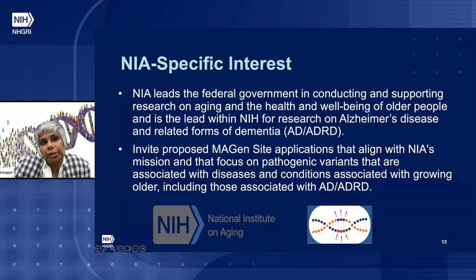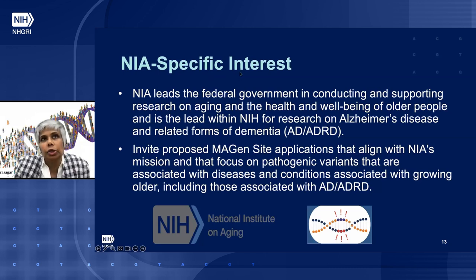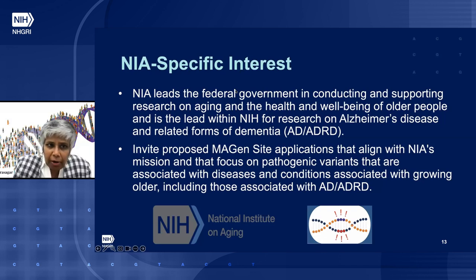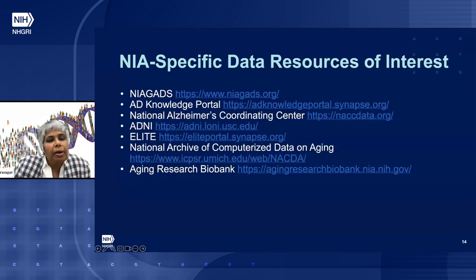The National Institute of Aging has a specific interest. While NHGRI is disease-agnostic, NIA leads the federal government in conducting and supporting research on aging, health, and well-being of older people, and leads NIH research on Alzheimer's disease and related forms of dementia (ADRD). We invite proposals for IMAGINE site applications that align with NIA's mission, focusing on pathogenic variants associated with diseases and conditions related to aging and ADRD. NIA has also suggested certain data resources of interest.